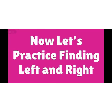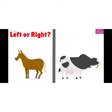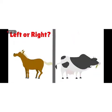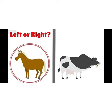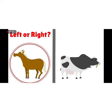Now, let's practice finding left and right. Is the horse on the left or on the right? Yes, you are correct. It is on the left side.